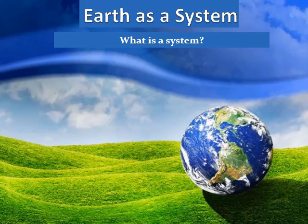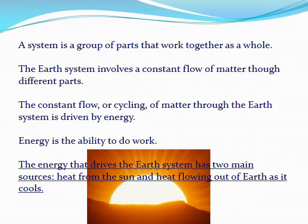So, the earth as a system. What is a system? A system is a group of parts that work together as a whole. The energy that drives the earth system has two main sources: heat from the Sun is the major one, and also heat flowing out of the earth as it cools.